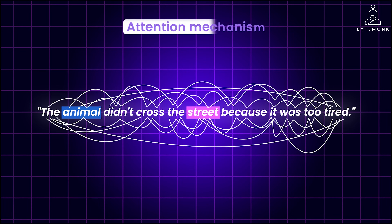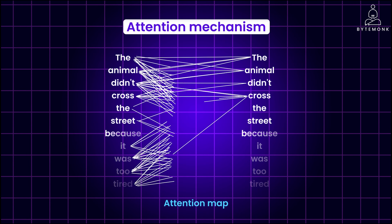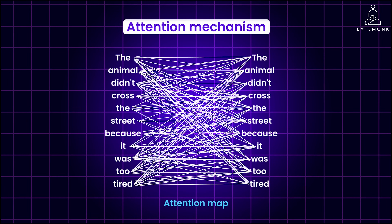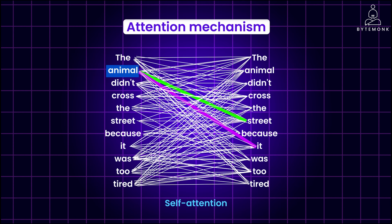Now let's understand the attention mechanism by drawing an attention map of our example sentence. This diagram is called an attention map and illustrates the attention weights between each word and every other word. In this example, you can see that the word 'animal' is strongly connected with, or paying attention to, the word 'street' and the word 'it.' This is called self-attention, and this ability significantly improves the model's ability to encode language.